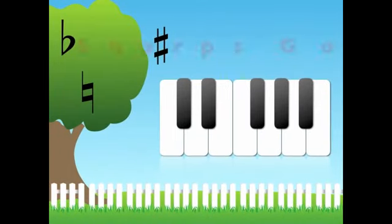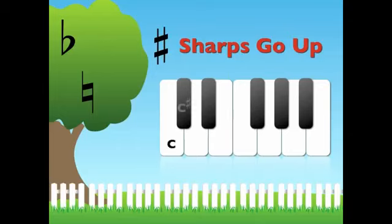Let's watch the sharps going up the keyboard. C goes up to C sharp. D to D sharp. E to E sharp. Hey, E sharp is a white key.